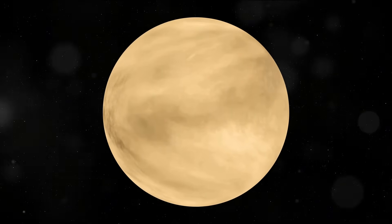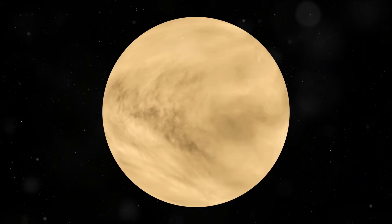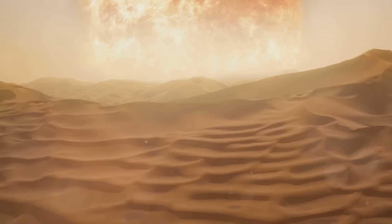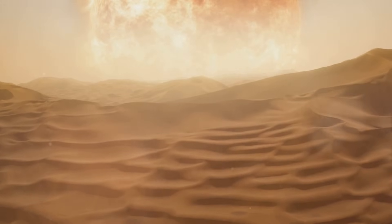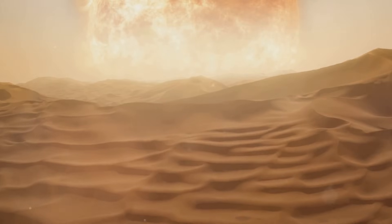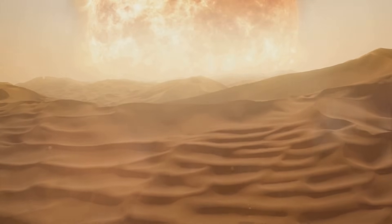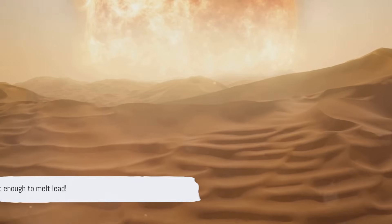This cloak of carbon dioxide and sulfuric acid makes Venus the hottest planet in our solar system. Even though Venus isn't the closest planet to the sun, its surface temperature can reach an astonishing 870 degrees Fahrenheit. That's hot enough to melt lead.